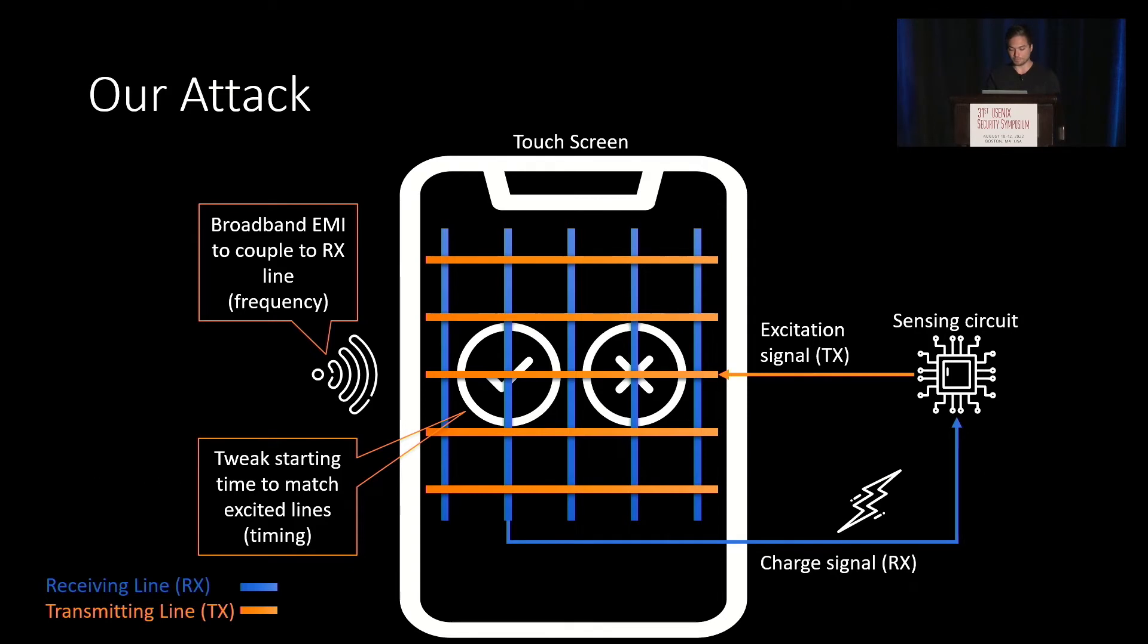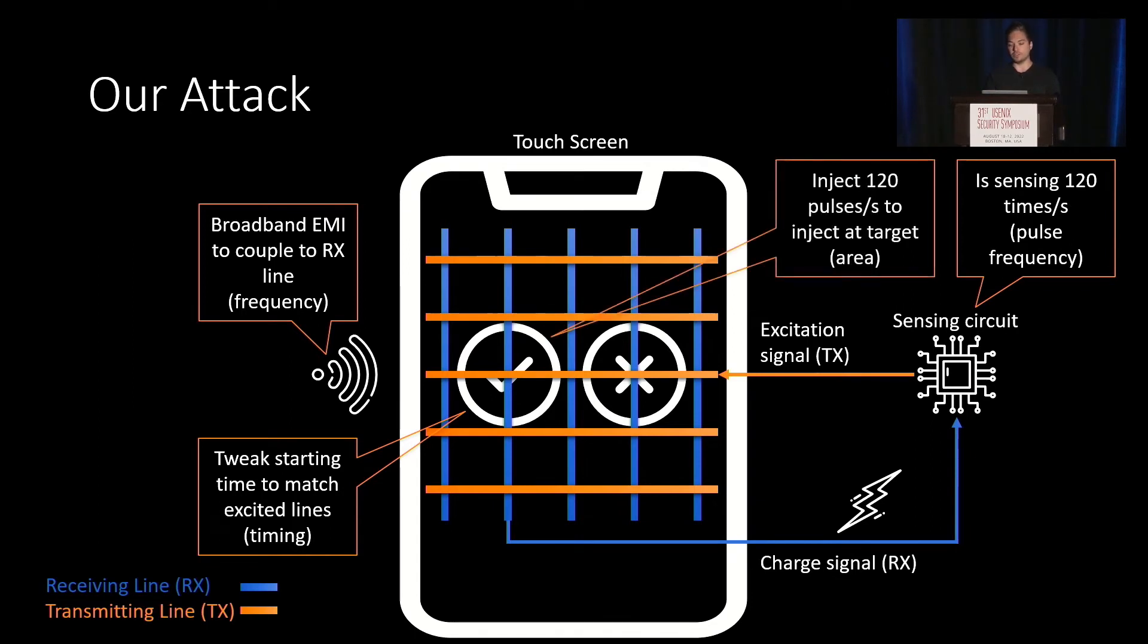For example, if the sensing circuit is sensing with 120 times per second the whole screen, then we also have to inject with 120 pulses per second.